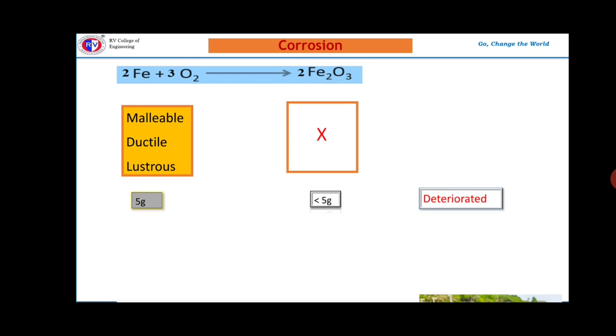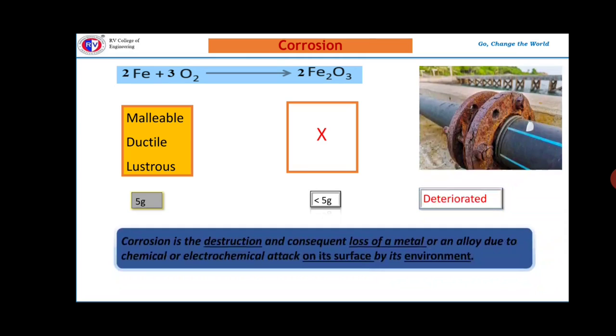In other way, before undergoing corrosion, metal, let us take metal is 5 grams. After corrosion, we can't get 5 grams. It gets deteriorated. Deteriorated means state of going worst. So based on these observations, we can define corrosion.